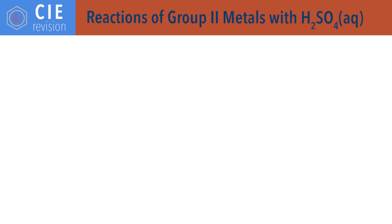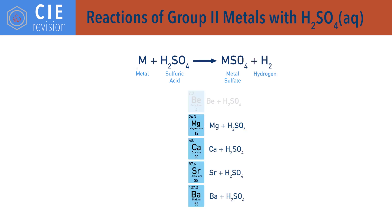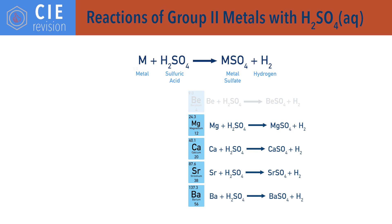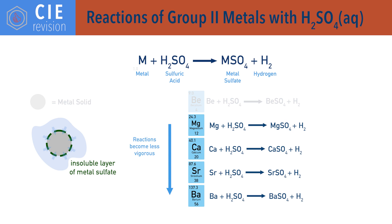Group 2 metals react with dilute sulfuric acid to form metal sulfates and hydrogen gas, with a general reaction: M + H₂SO₄ → MSO₄ + H₂. As the group 2 metals become more reactive going down the group, you would expect the metals to react more vigorously with sulfuric acid. However, this doesn't happen, because the solubility of the group 2 metal sulfates decreases down the group. If an insoluble metal sulfate is produced, it forms an insoluble layer around the solid metal that prevents or slows down any further reaction.